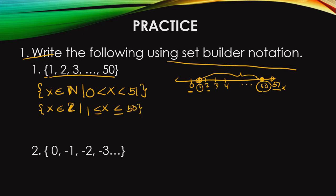So if we draw a number line — greater than or equal to and less than or equal to means it is included in the element. It can be equal to 1, so we start at 1, 2, 3, up to 50.